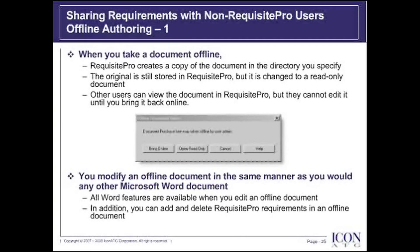On the slide, I've shown the tool's response when I try to access a file. In this situation, it tells me that the purchase item document was taken offline by the user admin. When offline, you modify a document in the same manner as any other Microsoft Word document. Using the Requisite Pro extensions to Word, you can also add and delete requirements in the offline document.